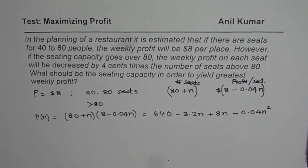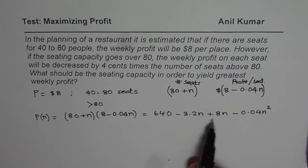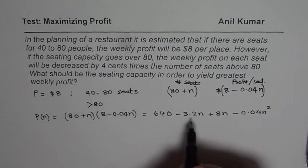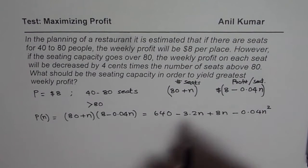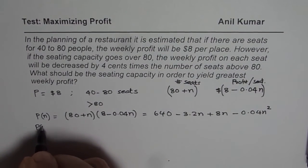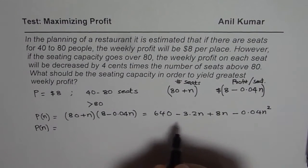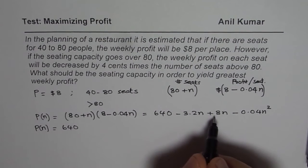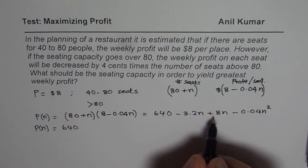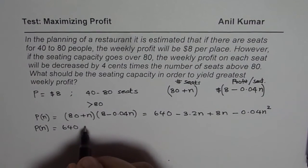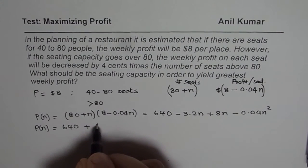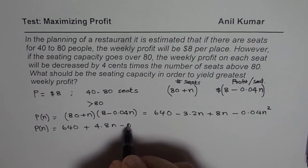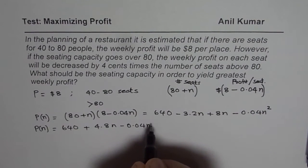And this one we get minus 0.04 N square. So that becomes a quadratic equation in N for the profit. So we can always combine these terms and write profit in terms of additional seats is 640 minus 3.2 from 8 will give us 4.8. So it is plus 4.8 N and we have minus 0.04 N square.